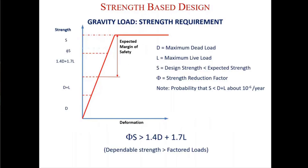This is how we design for normal loads. You can see the levels: dead load, dead load plus live load, then we increase with load factors, plus we have margins for material strength where we reduce the characteristic strength by partial factors. Where we actually need to design our structure is at the dead plus live load level, but we have a great margin of safety to resist normal loads.